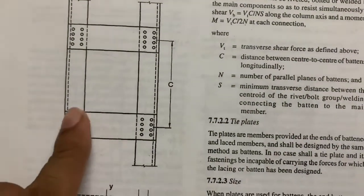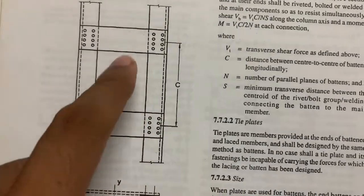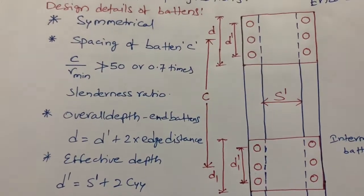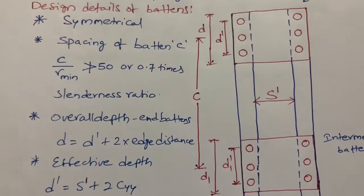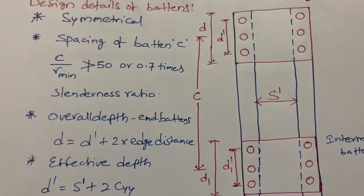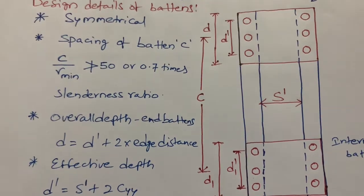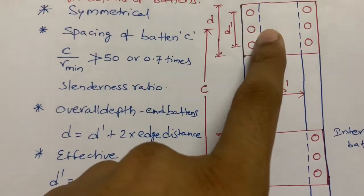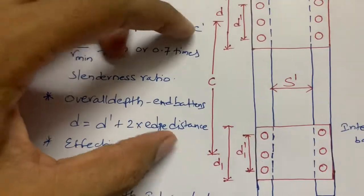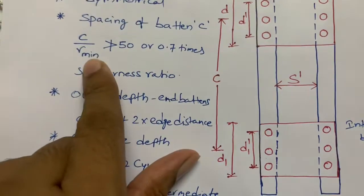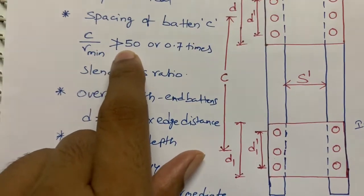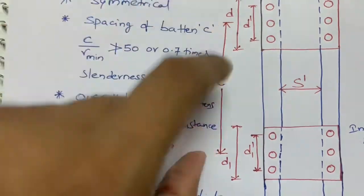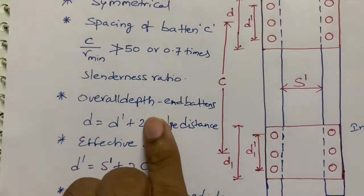This is the arrangement of batten plates — the same diagram. The first design detail is we need to arrange the batten plates symmetrically. When it comes to spacing of these battens, I call it 'c'. The code specifies that c/r minimum shall not be greater than 50, or 0.7 times the slenderness ratio, while arranging the spacing.